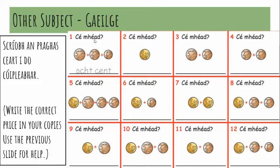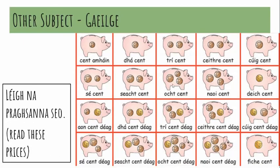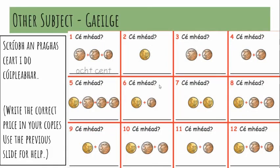It says cé mhéad — how much? Each box is one of twelve boxes and they all say cé mhéad. You have to add up how much cent is shown and then write the answer in words, not in numbers. So we can see five plus two is seven, plus one is eight — so we have eight cents: ocht cent. If I wasn't sure about that one, I could go back and find out where ocht cent is on the previous slide. So try and get those cé mhéad answers written into your copy — into your cóipleabhar.